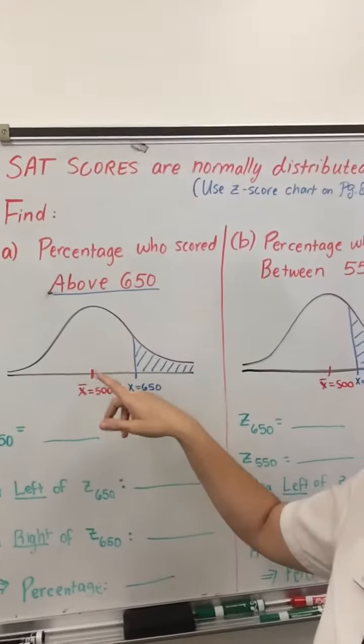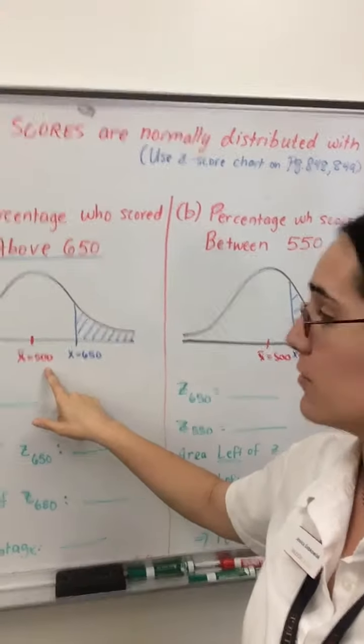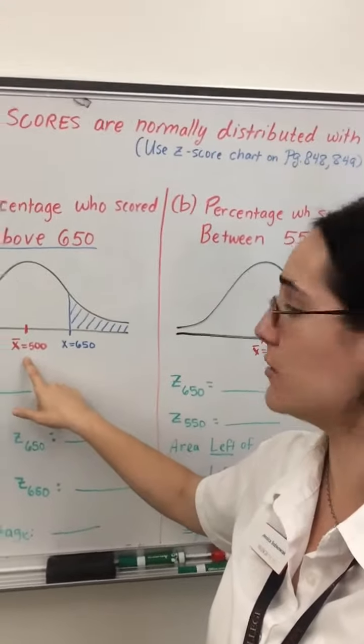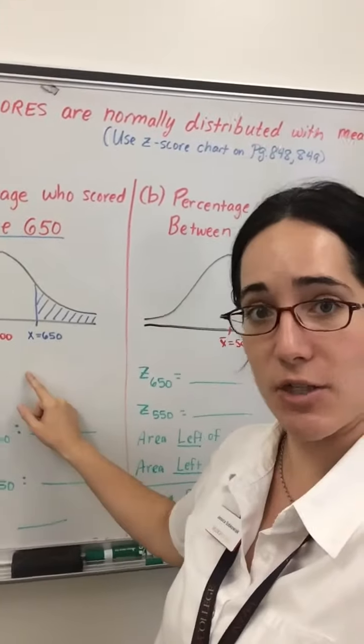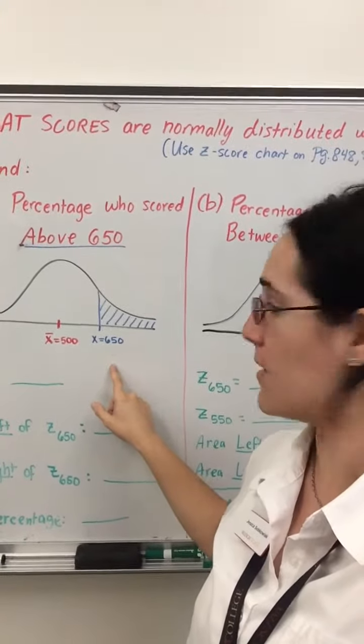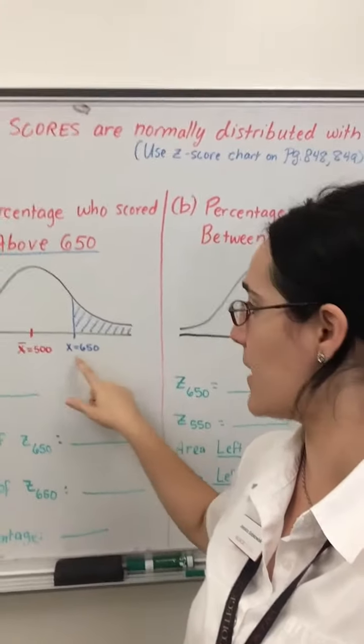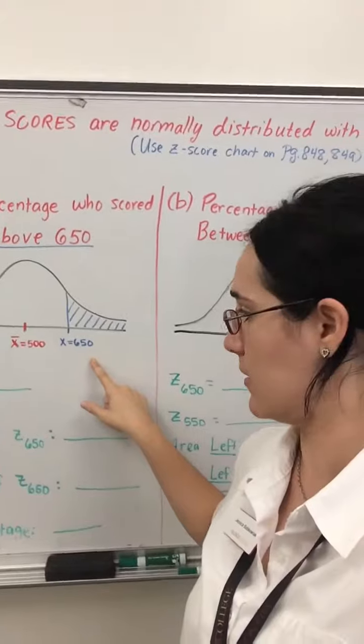On the first bell curve, we want to find above 650. So in the middle, we'll put our mean, which is given to us as 500. And 650 is larger than 500, so that's to the right of the mean. And we shade the region that we're interested in. We'd like above 650, above x equals 650.